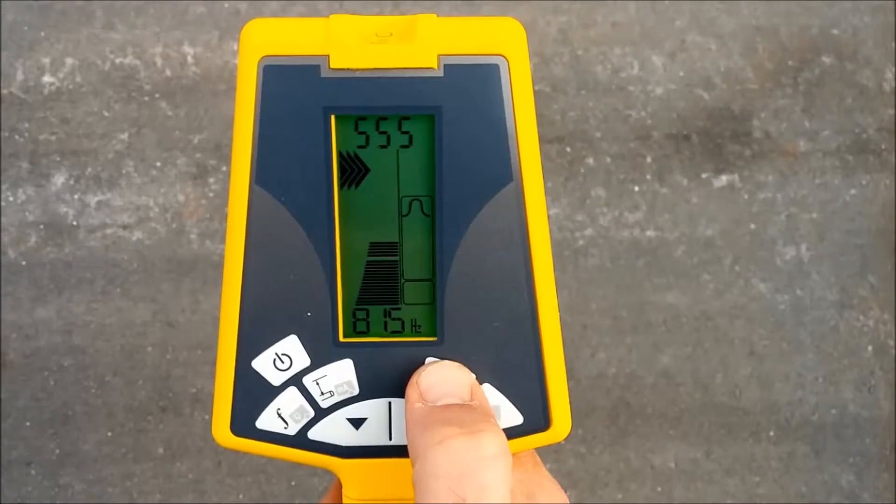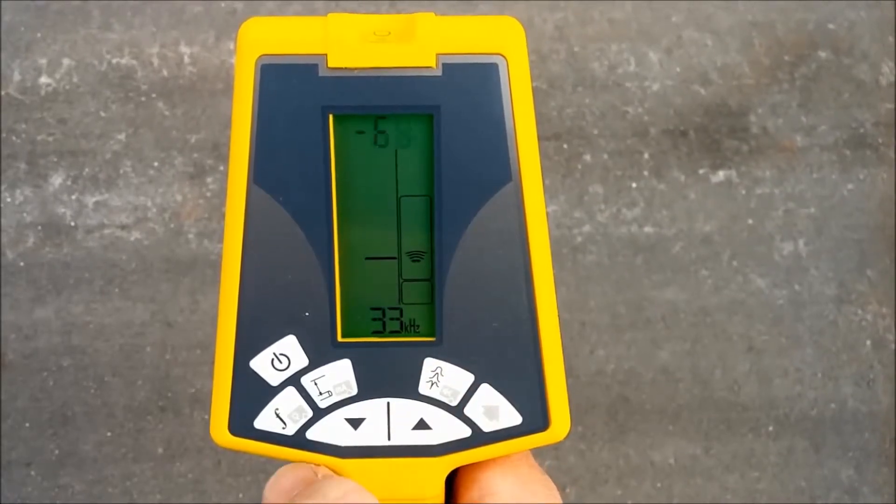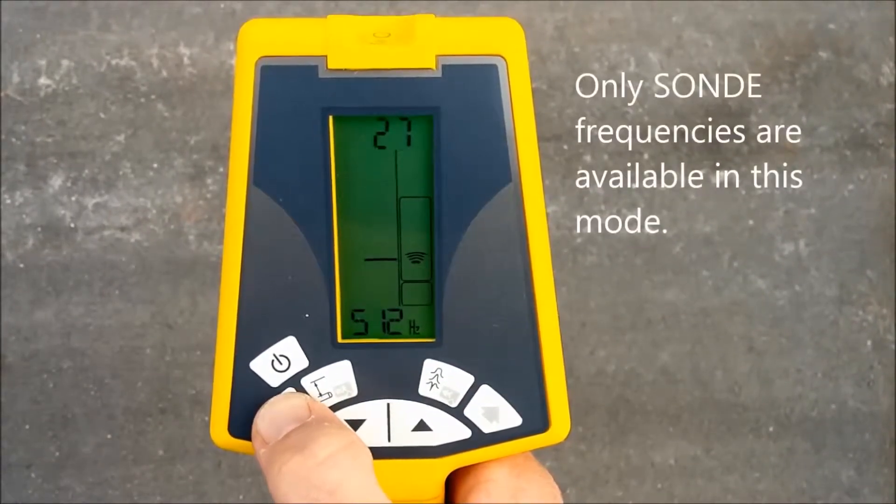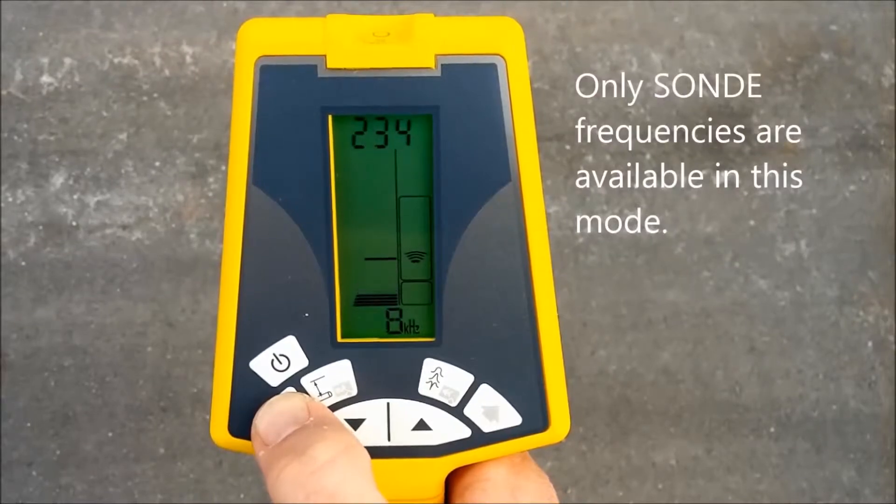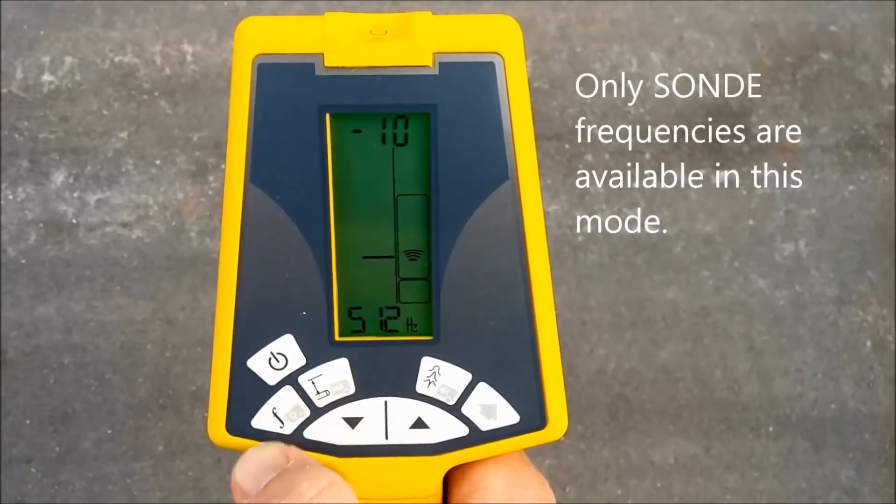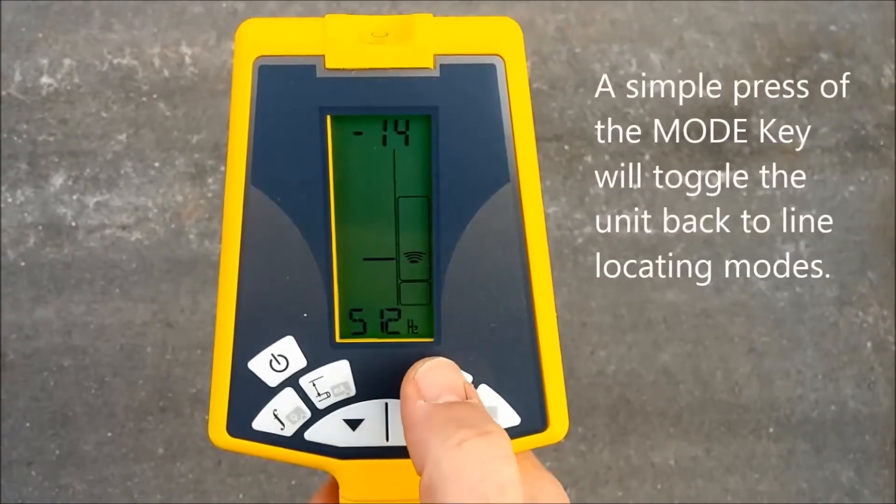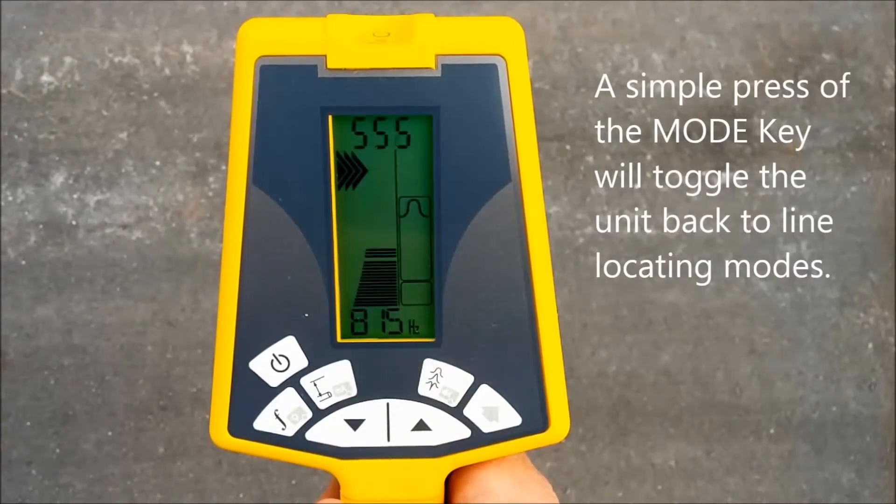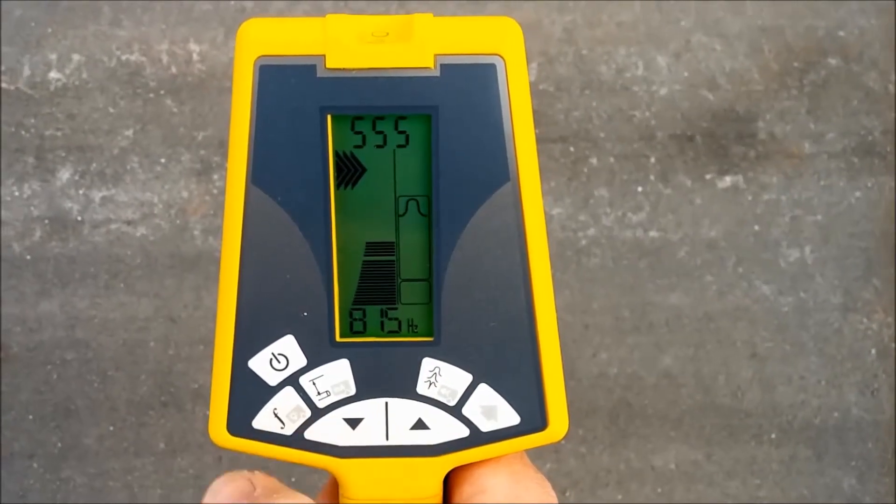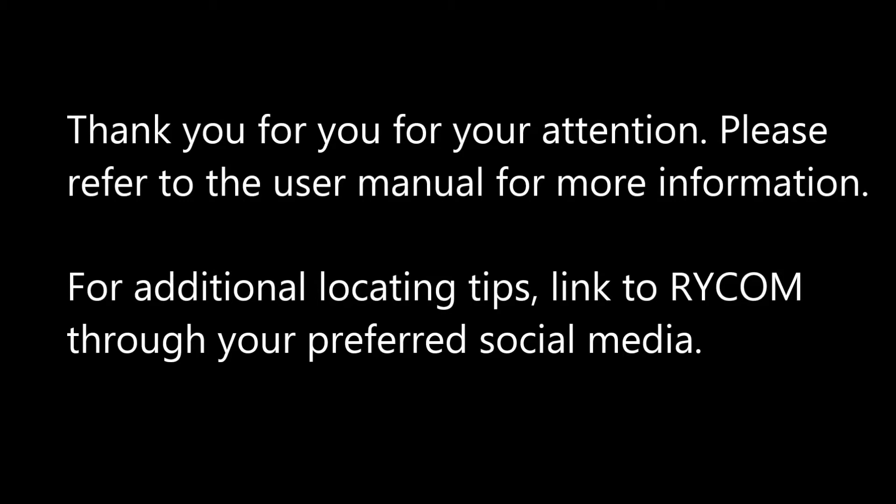To select the sound locating mode, simply depress the mode key for 5 seconds. Only sound frequencies are available in this mode. To exit the mode, simply press the mode key and it will toggle back to the normal line locating modes.